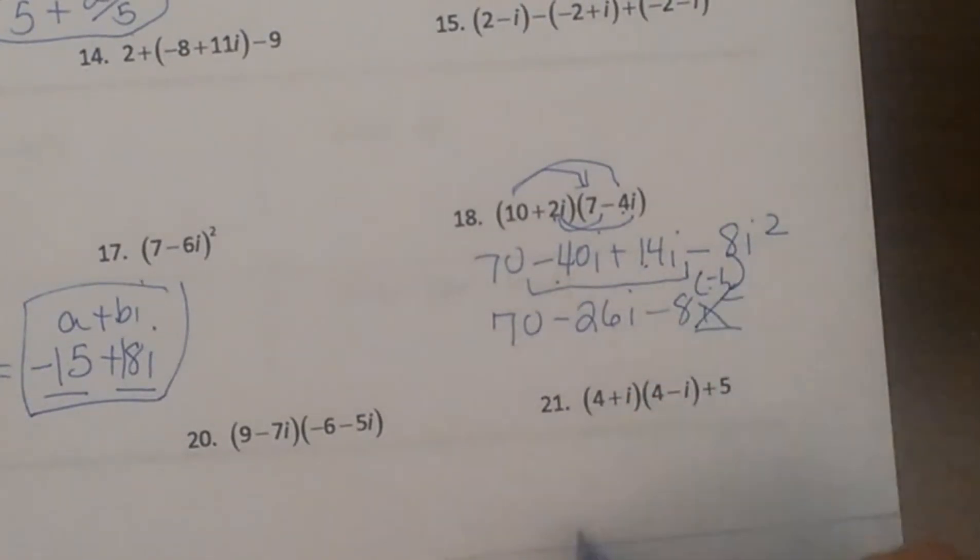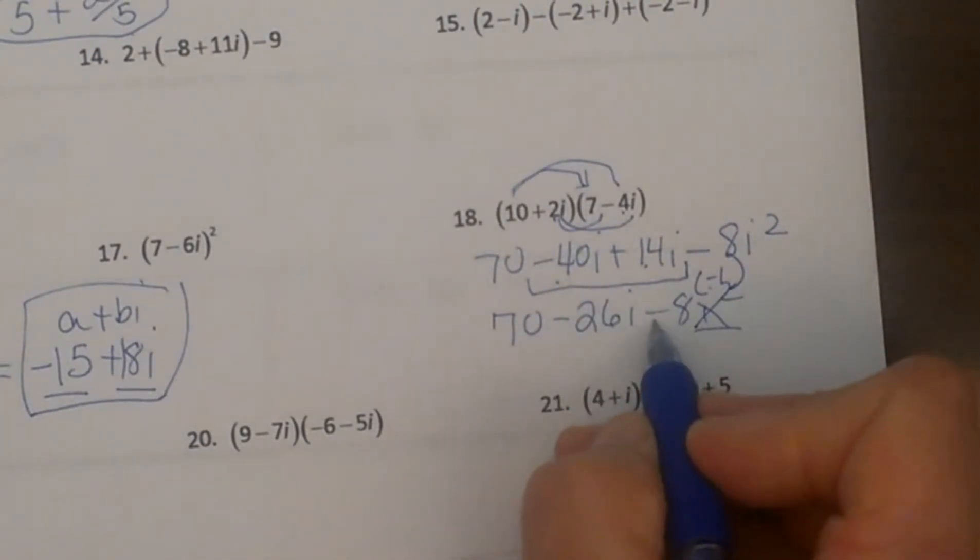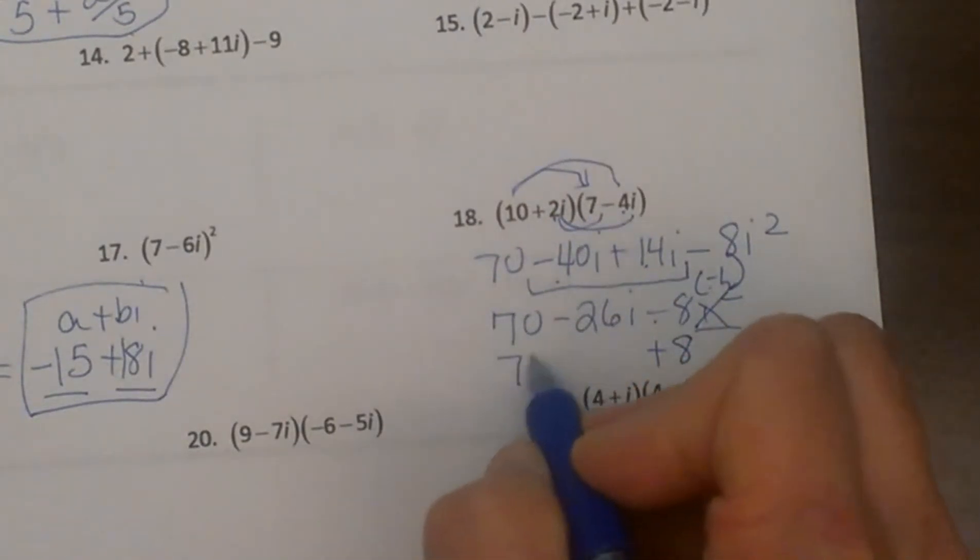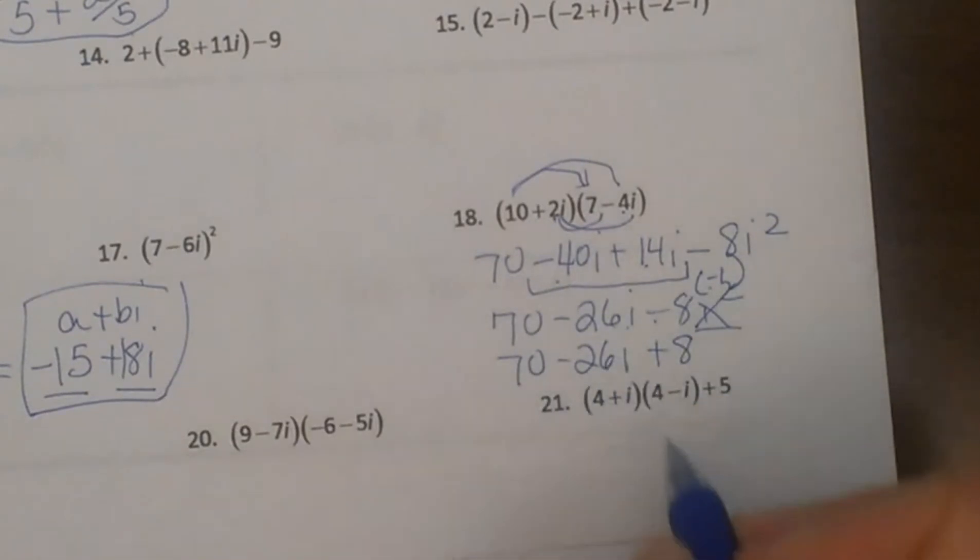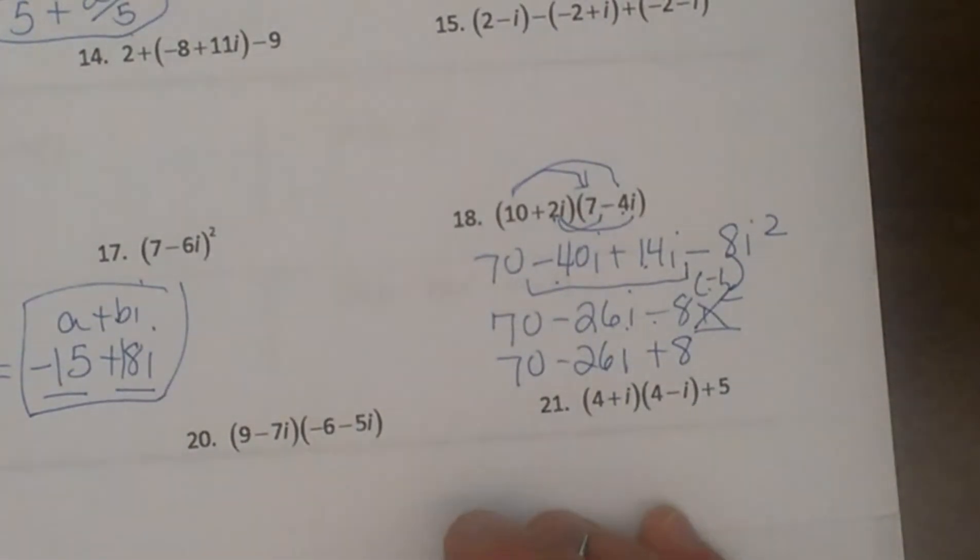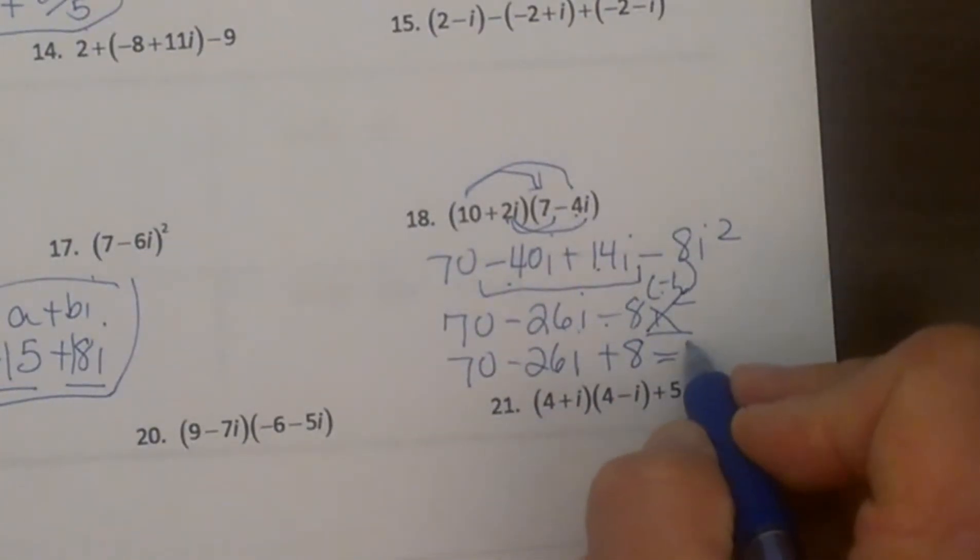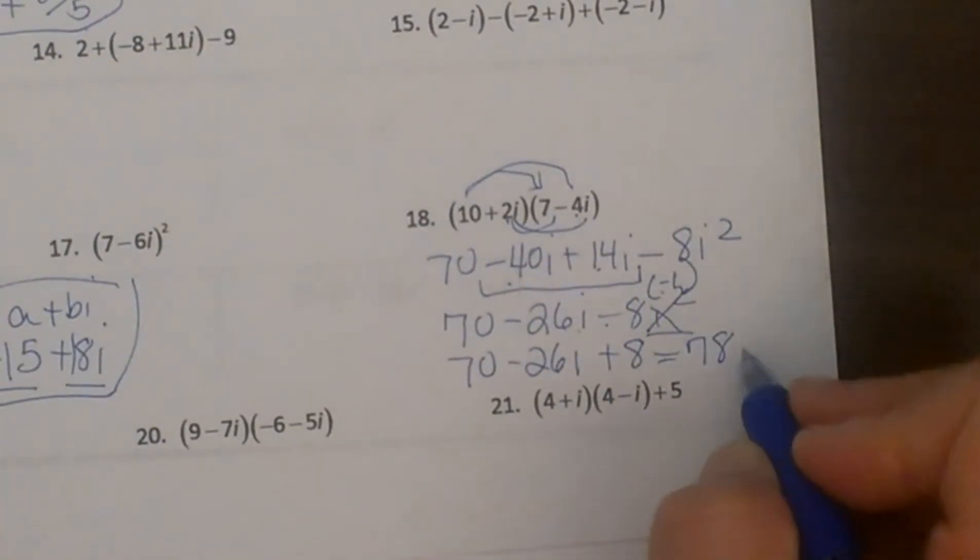So I have negative 8 times negative 1, so that becomes a positive 8. So I have 70 minus 26i plus 8. Now I need to get it in the correct form. I can still now combine the 70 and the 8, so that becomes positive 78 minus 26i, and it is in the a plus bi form.